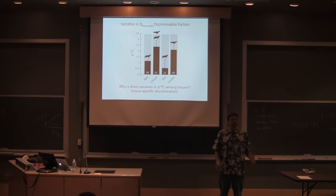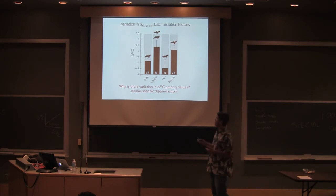We call that tissue specific discrimination. Why don't all the tissues have the same carbon isotope value? Because that mouse ate the same thing its entire life. And the reason is that different tissues have different amino acid concentrations. They're built with subtly different building blocks.